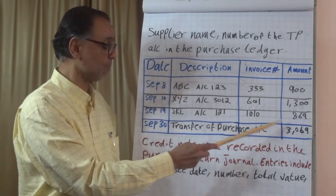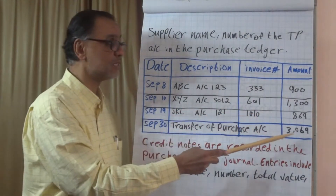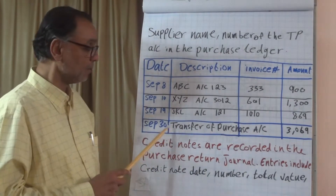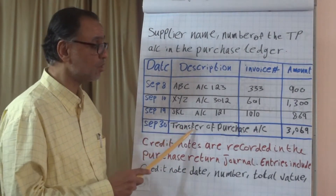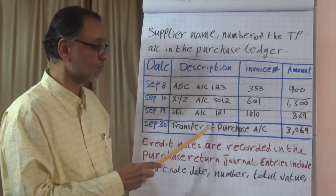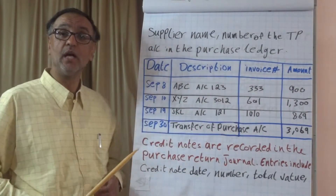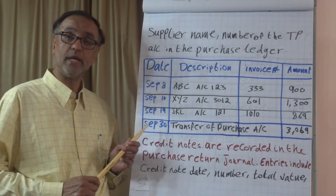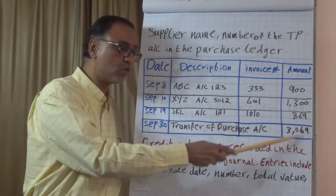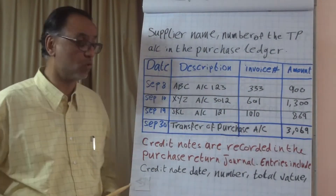The total of the purchases for the month — that's September 30th — is $3,069. At the end of the month, we transfer the total purchases to the purchase account in the general ledger, and we'll see where it will go.